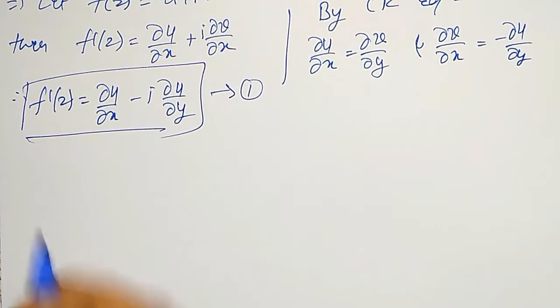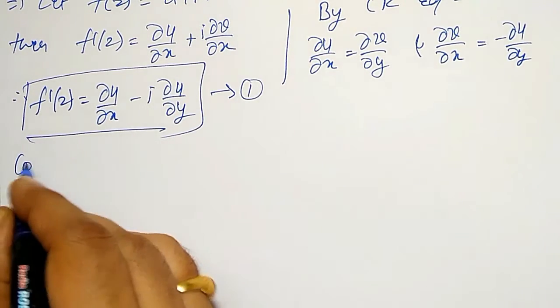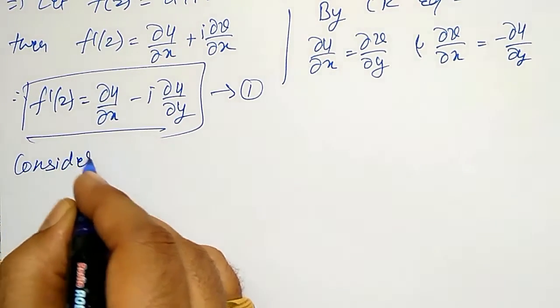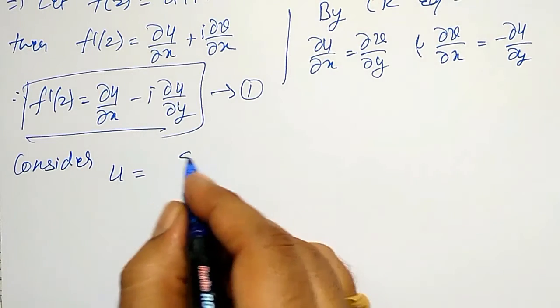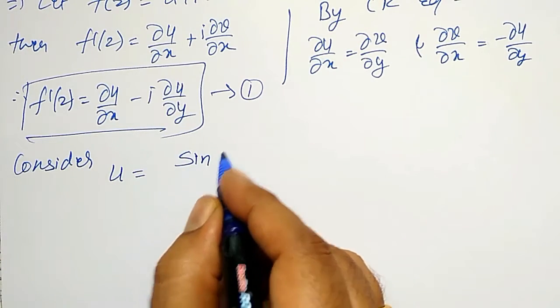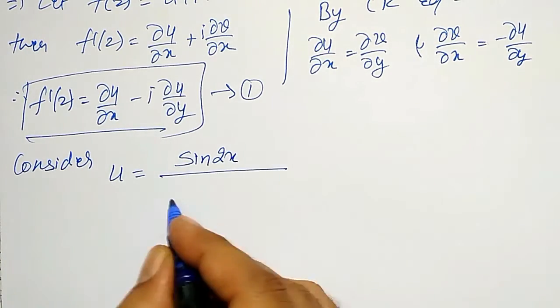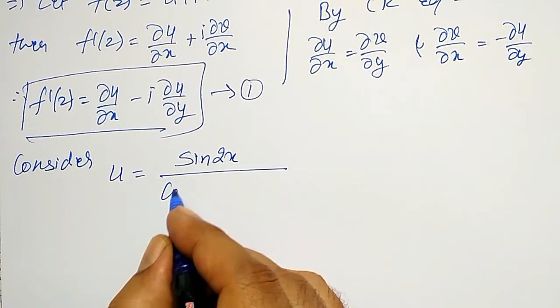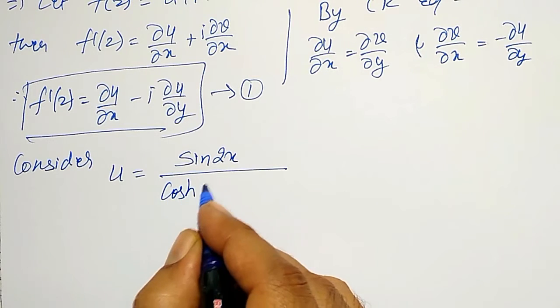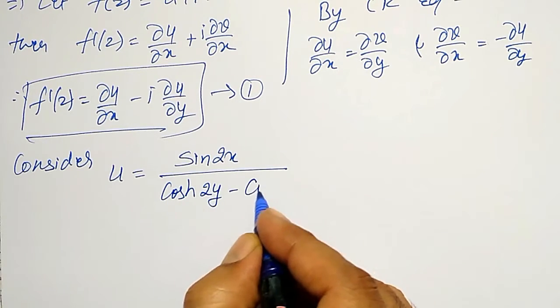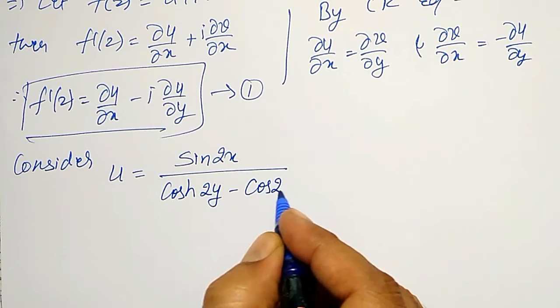Now consider u = sin 2x / (cosh 2y − cos 2x).